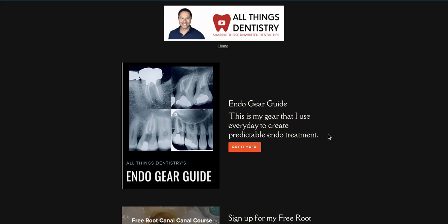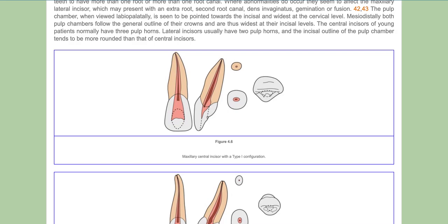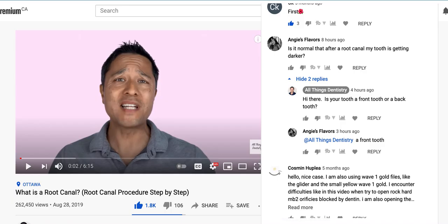This is Ash from All Things Dentistry, the place where we're passionate about sharing those unwritten hints and tips of dentistry. Today I wanted to talk about why is your tooth getting darker after you had a root canal? Angie Flavors had asked a question: is it normal after root canal my tooth is getting darker? I was wondering if it's a front or back tooth, and she said it was a front tooth. So let's make a video about it.